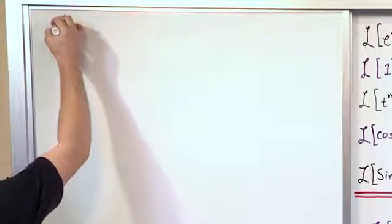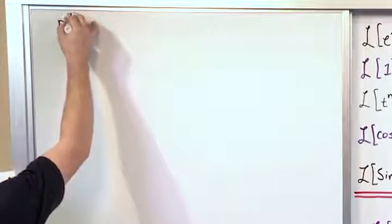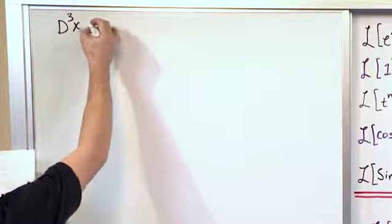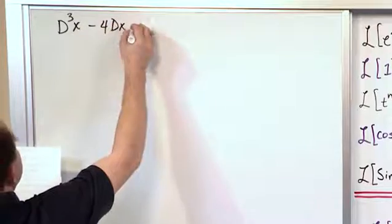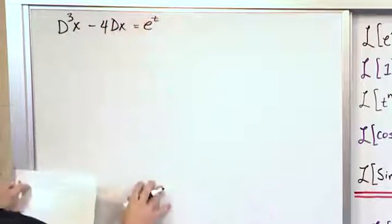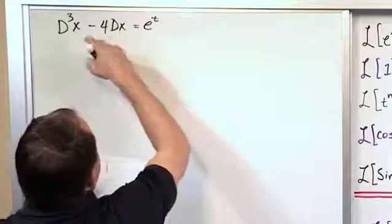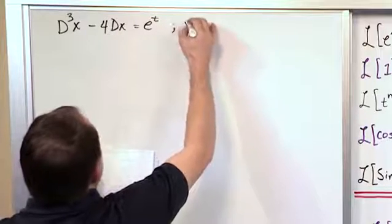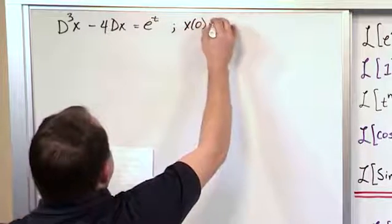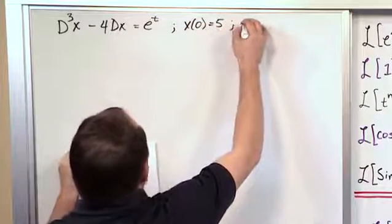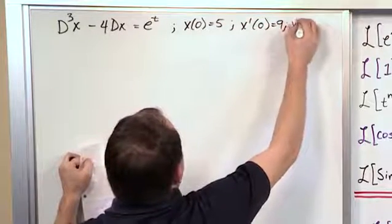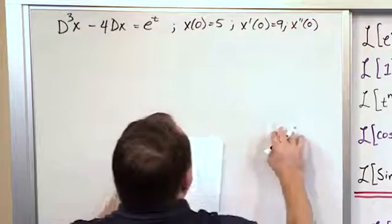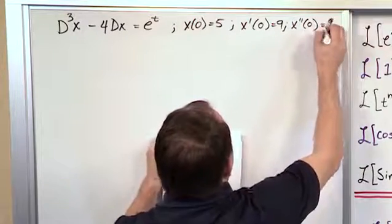So here we have a third derivative, our first one. Third derivative of the function x minus 4 times the first derivative is equal to e to the t. That's our differential equation. And because it's a third derivative, we have three initial conditions: x of 0 is 5, x prime of 0 is 9, x double prime of 0 is also 9.